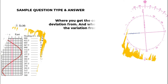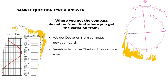Let's go to the sample questions. Where do you get the compass deviation from, and where do you get the variation from? We get the deviation from the compass deviation card, and the variation we get from the chart on the compass rose.